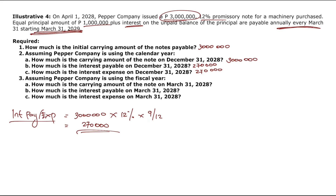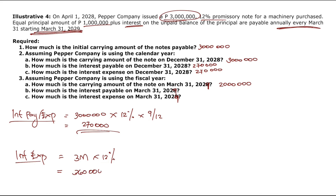Using the fiscal year ending March 31, 2029: On March 31, 2029, the first 1,000,000 principal payment is made, so the carrying amount becomes 2,000,000. Interest expense for the period = 3,000,000 × 12% × 12/12 = 360,000. Interest payable on March 31, 2029 is zero because payments are made on that date — unlike the calendar year scenario where interest was still outstanding on December 31.